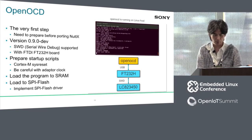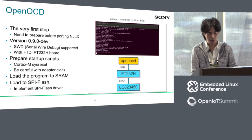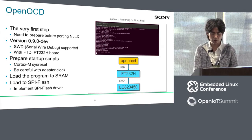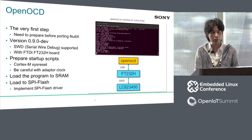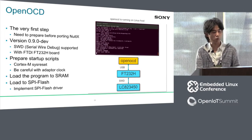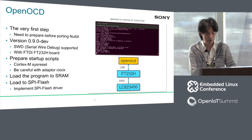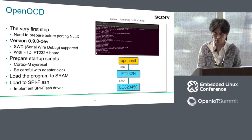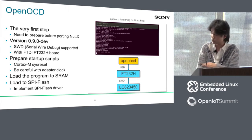To start porting NuttX, we first had to set up OpenOCD on-chip debugger by writing OpenOCD scripts. Without this tool we cannot boot the microcontroller. To connect OpenOCD to the microcontroller via SWD — serial wire debug — we use a popular FTDI chip. When we started this project, OpenOCD did not officially support SWD, but we were lucky that SWD support was officially merged into the master branch just before we received the FPGA.